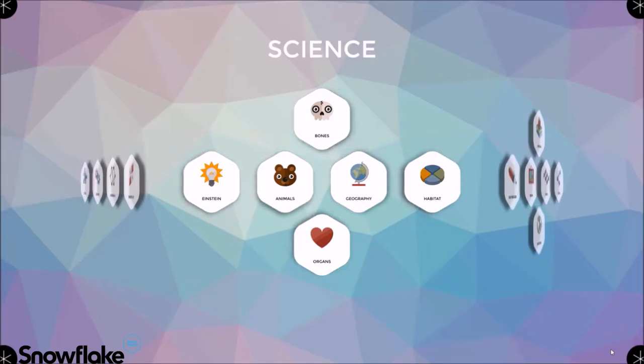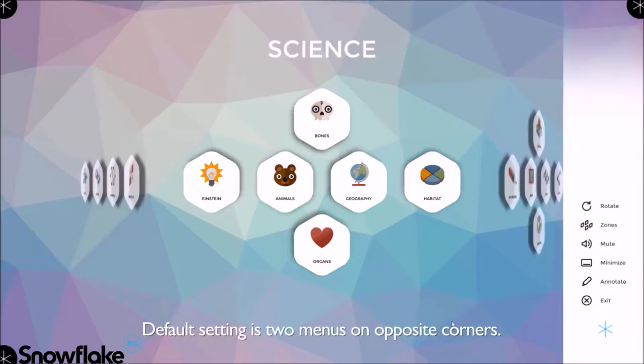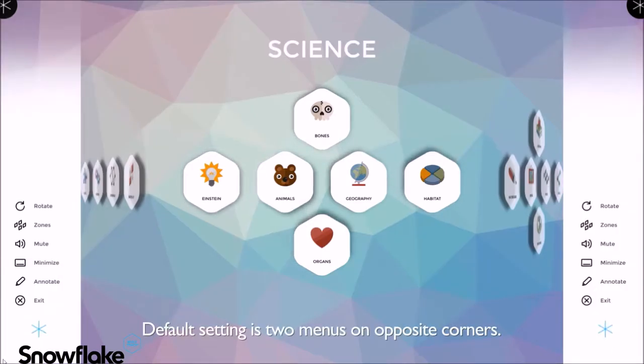Starting in the main Snowflake interface, you'll see that I've set access to corner menus in each corner of the screen for this demonstration. The default setting is two menus on opposite corners.